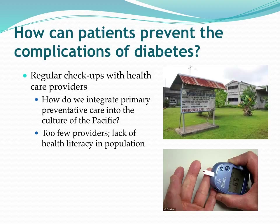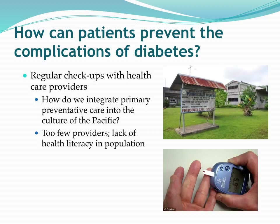The primary prevention need is regular checkups with healthcare providers. How can we integrate primary preventative care into the culture of the Pacific? How do we convince individuals, because while our cultures are similar in many ways, they differ across particular islands? In many Pacific cultures, we don't necessarily go to the doctor on a routine or screening basis — we tend to turn to family, friends, and traditional healers. We need to find a way to integrate the idea of going to the doctor when healthy to prevent illness into Pacific culture.